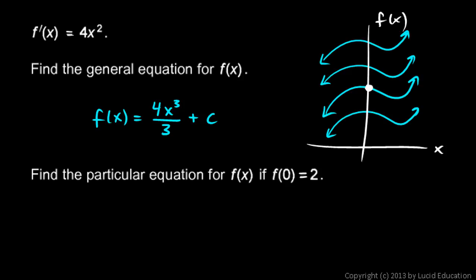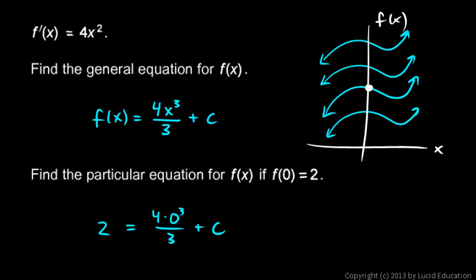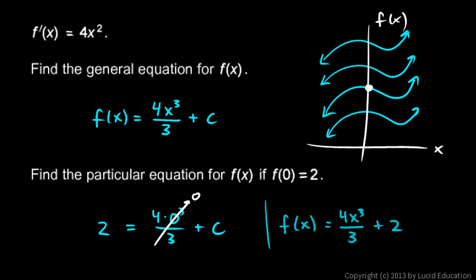Let's find the particular equation that fits this piece of information. All we do is plug in: f of 0 is 2, meaning if x is 0, the value of the function is 2. So 2 equals 4 times 0 cubed over 3 plus c. That term is obviously 0, so c equals 2. The particular equation is f of x equals 4x cubed over 3 plus 2.